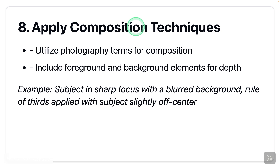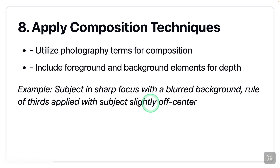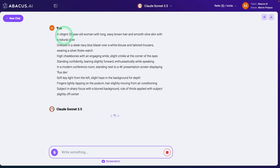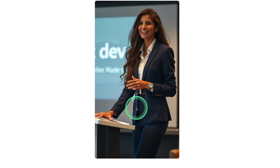Next: apply composition techniques. Utilize photography terms for composition and include foreground and background elements for depth. Example: 'subject in sharp focus with a blurred background, rule of thirds applied with subject slightly off center.' As you can see, I keep adding additional prompts to make the image better. Here you go — background always blurred, slightly off center. Rule of thirds is a term in photography meaning standing slightly off the center.